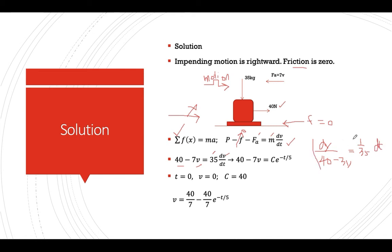And then we integrate both sides and simplify the equation. We'll give you 40 minus 7v equals c e to the negative t over 5. And at t equals 0, the velocity initially is 0. And substituting, e to the 0 is 1, that gives you c equals 40. So this is your v as a function of time.